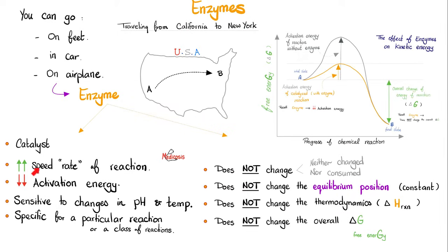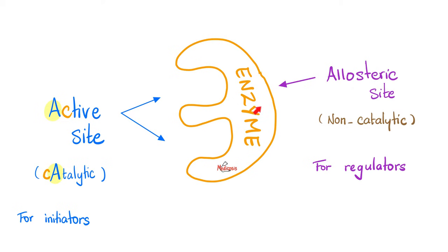What do enzymes do? They increase the rate of the reaction, they decrease the activation energy, they do not change the equilibrium position, they do not change the thermodynamics, and they do not change the overall free energy of the reaction. Each enzyme has an active site and an allosteric site — or as I like to call it, the front door versus the back door. The front door, the active site, has the catalytic activity, but the allosteric site does not have catalytic activity.